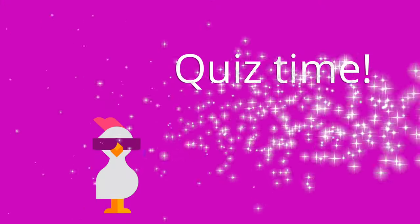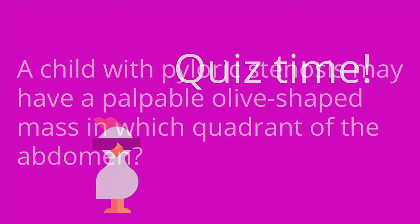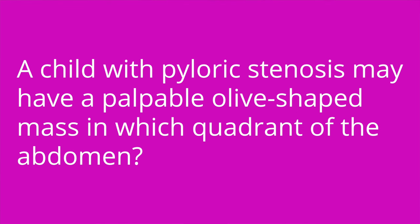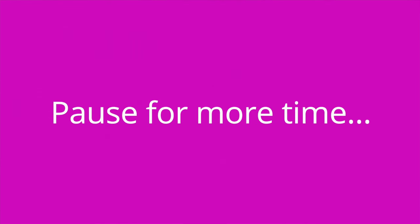It's quiz time, and I've got three questions for you. Question number one: a child with pyloric stenosis may have a palpable olive-shaped mass in which quadrant of the abdomen? The answer is the right upper quadrant.